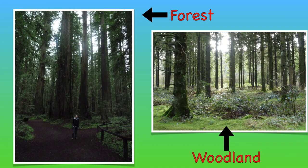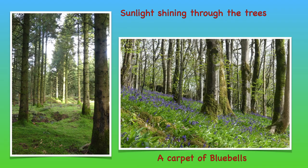First of all, let's find out the difference between a woodland and a forest. Well, they are both areas that have a lot of trees pretty close together, but woodlands are a little bit more open than forests. They have more space between trees and are able to let more sunlight through. Forests, on the other hand, have so many trees all growing close together that it can be quite dark if you walk deep into the forest.